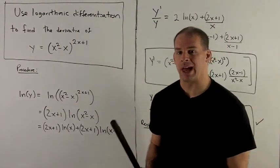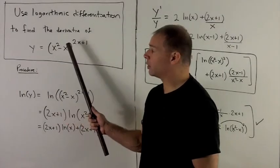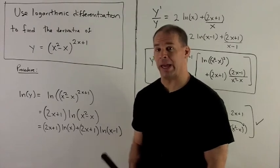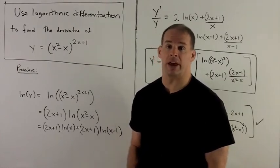So the way we proceed with logarithmic differentiation, I'm going to take the natural log of both sides. I don't have to take the natural log. I could take the log to any base, but usually it's going to be easier with natural log because when we get to derivatives, derivatives of natural log are a little bit simpler than the other kind.